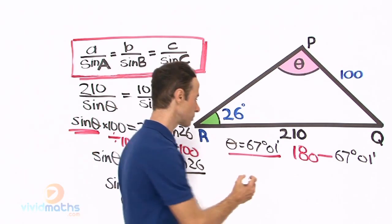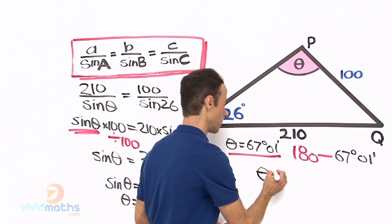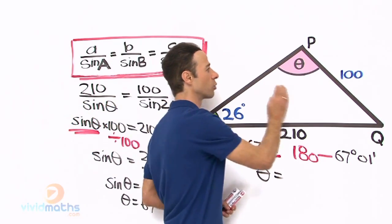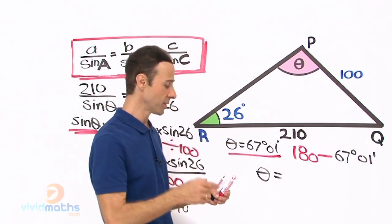On your calculator 180 minus 67 degrees 1 minute, the angle right in here, theta is 112 degrees 59 minutes.